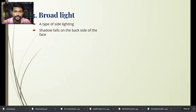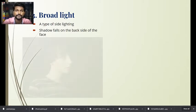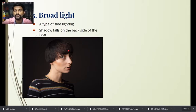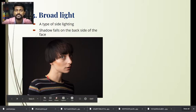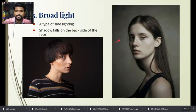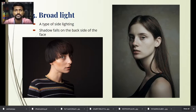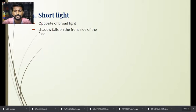The third type is broad lighting, which is a type of side lighting where the shadow falls on the back side of the face. The face is in a profile view and the light falls on the broad side of the face. In this example, the left side profile view also has the broad side of the face covered with light. You can use any one studio light for this type of lighting.